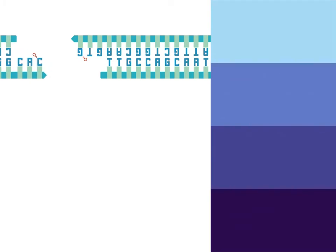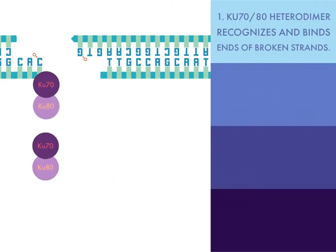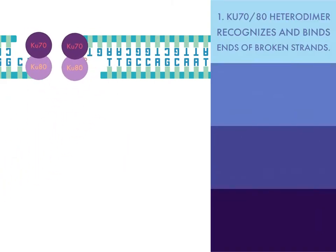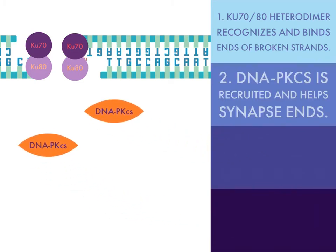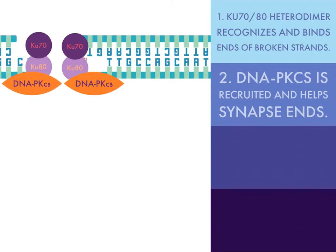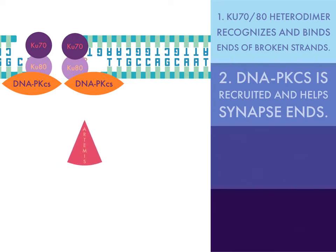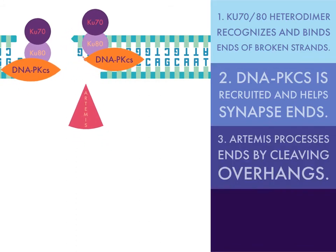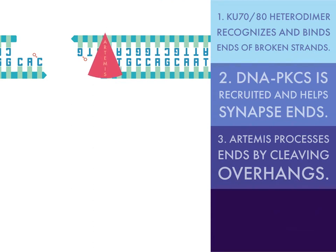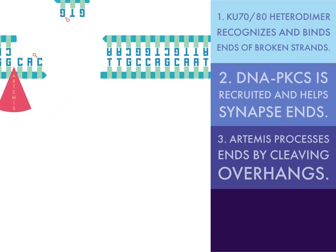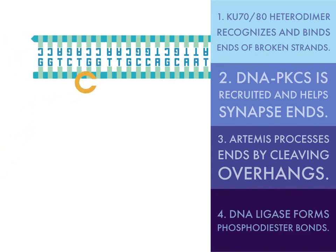Non-homologous end joining brings together free strands of DNA and re-ligates them. There are three main steps. First, the Ku70-Ku80 heterodimer recognizes and binds to the broken ends of the DNA strands. Once bound, the Ku70-Ku80 heterodimer recruits the DNA-PKcs complex — DNA-dependent protein kinase catalytic subunit — which is a kinase that synapses the DNA ends by phosphorylating specific targets, in turn recruiting proteins including Artemis and DNA ligase. Artemis is a nuclease that processes DNA ends for rejoining; if the broken DNA has an overhang, Artemis cleaves it, resulting in a loss of genetic material. Once the DNA ends are joined, DNA ligase forms the phosphodiester bond.